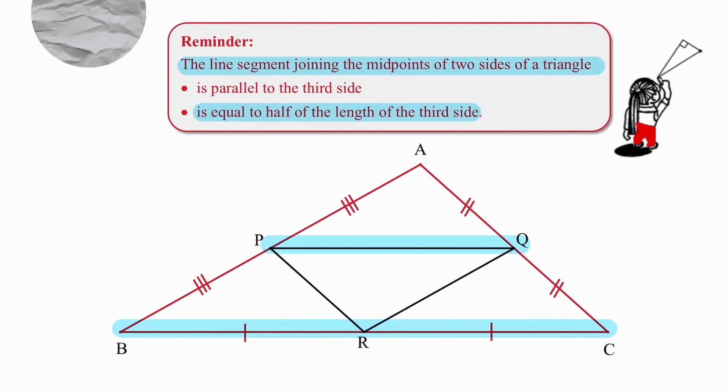Joining the midpoints P and R gives us a length exactly half the length of AC. And finally, joining the midpoints Q and R gives us a length exactly half the length of AB. Think about that, pause the video and try one more time on your own.